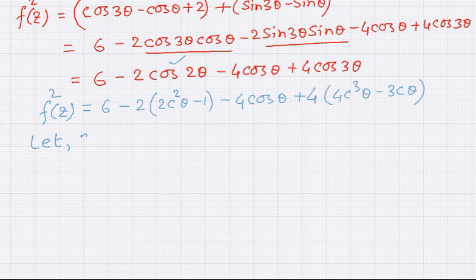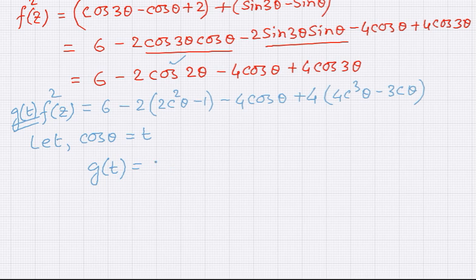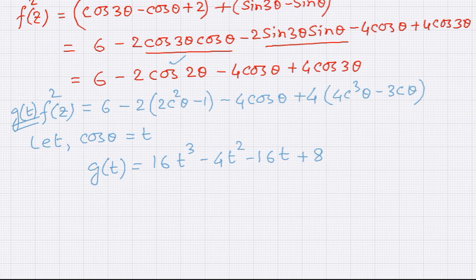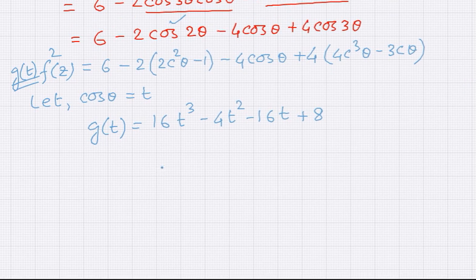So let cos θ equal to t. If we let cos θ equal to t, then taking this function to be g(t), g(t) can be written as 16t³ minus 4t² minus 16t plus 8. This is now a function of cos θ alone.